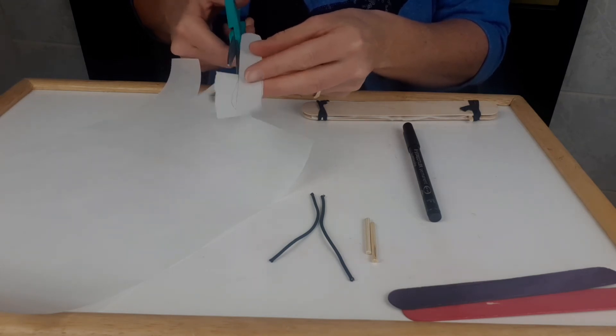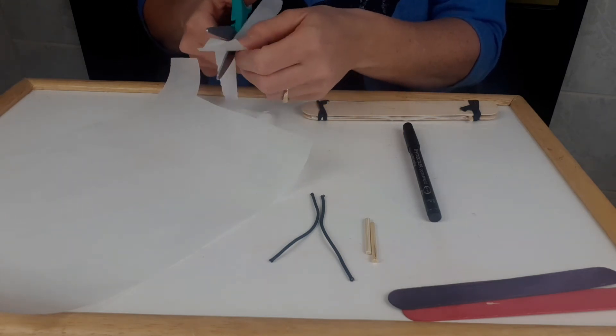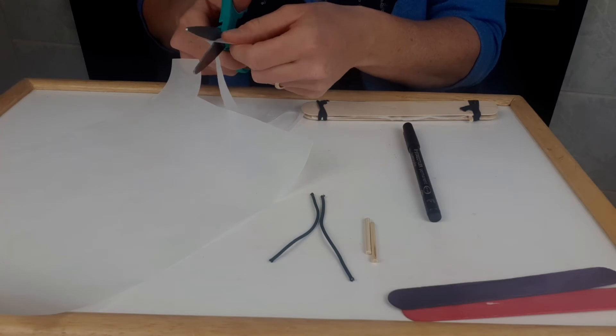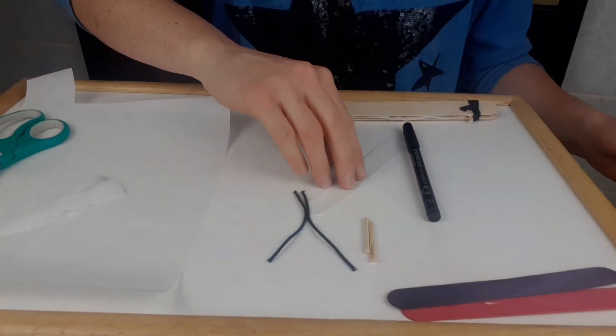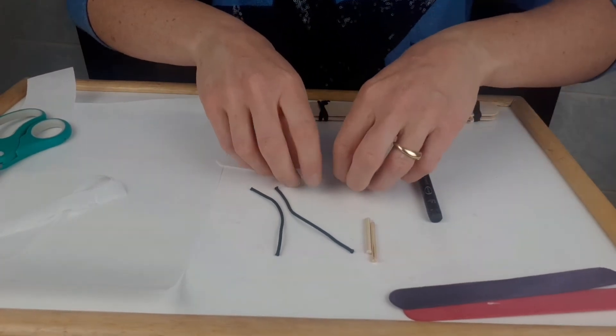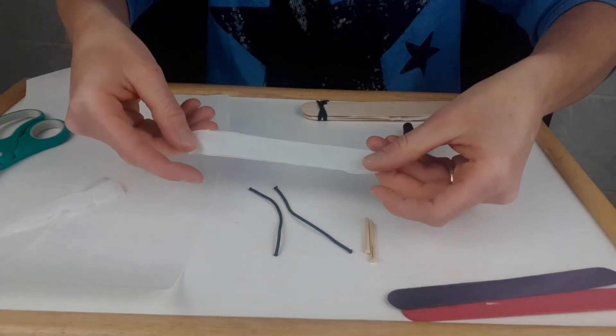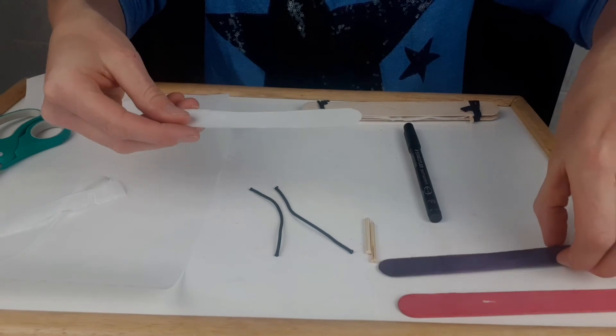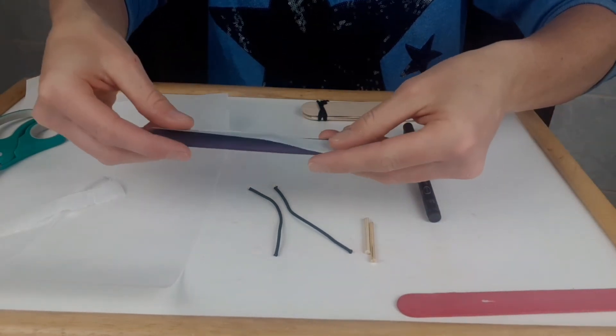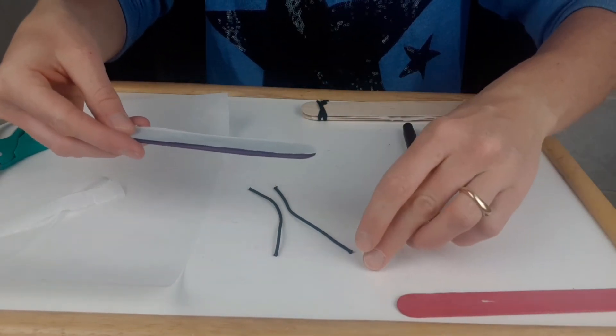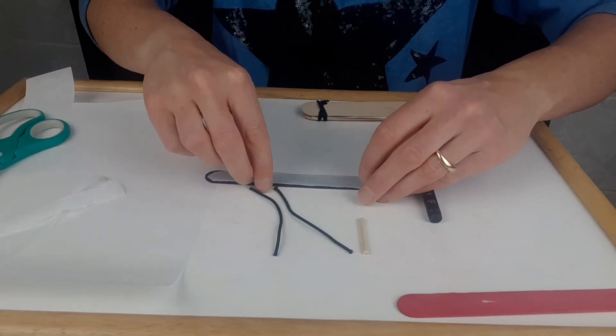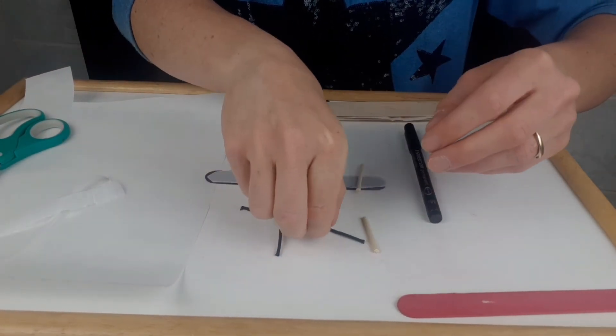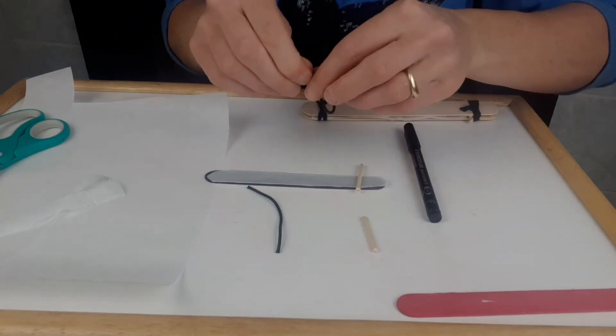For older kids, tracing, measuring, and cutting are all great for developing fine motor coordination. So now we have our piece of paper. Here we go, approximately the same size as our popsicle sticks. We're going to take it and line it up here, and we're going to take one of our little pieces of wood and put it on the end. We're going to put it on top of the paper.